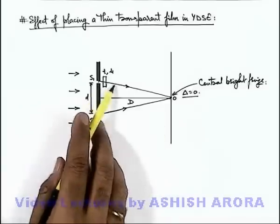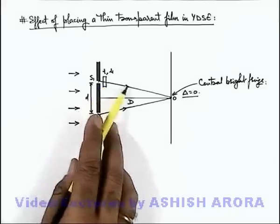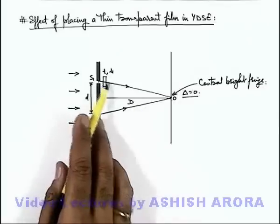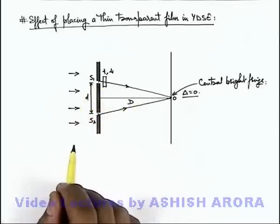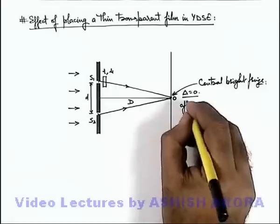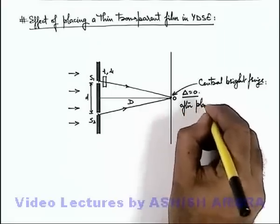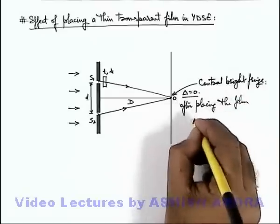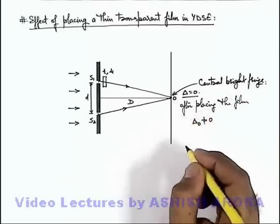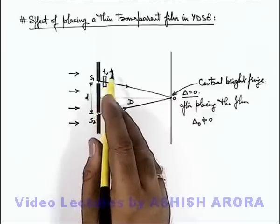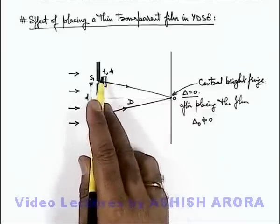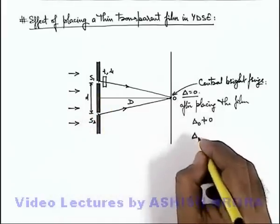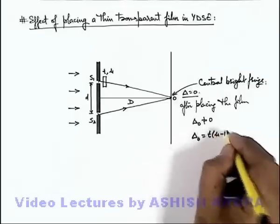As the speed of light is less in this medium, this light will get delayed, and light from S2 will be ahead in path with respect to the wave coming from S1. After placing the film, the path difference at point O will not be equal to zero. For a medium of refractive index μ and thickness t, the path difference can be written as t multiplied by (μ − 1).